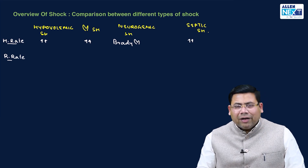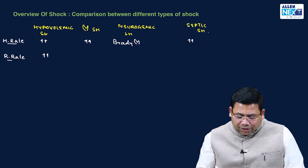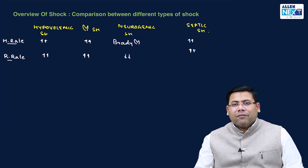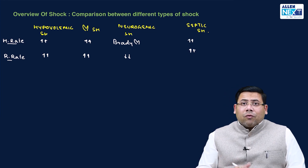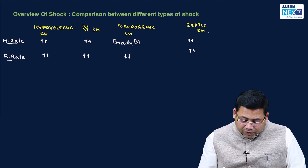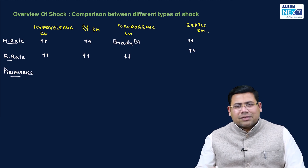Why not neurogenic shock? There is central loss of sympathetic tone, so that is the case where you get to see bradycardia. The next very important thing is respiratory rate. When you talk about respiratory rate, it is going to increase in all types except neurogenic shock.